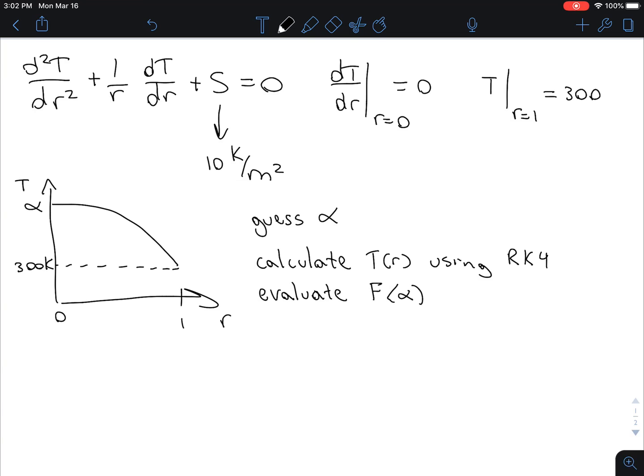F of alpha, which is going to be T at R equals 1 calculated minus the temperature that we know to be correct, which is 300. So, in fact, this is the shooting method.